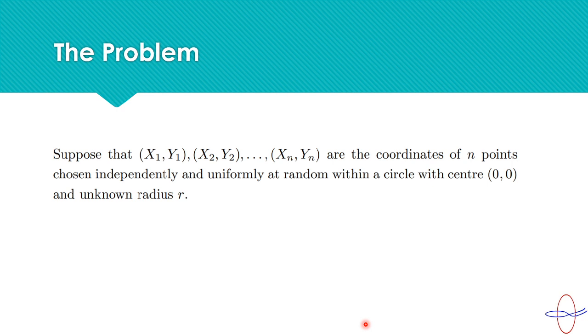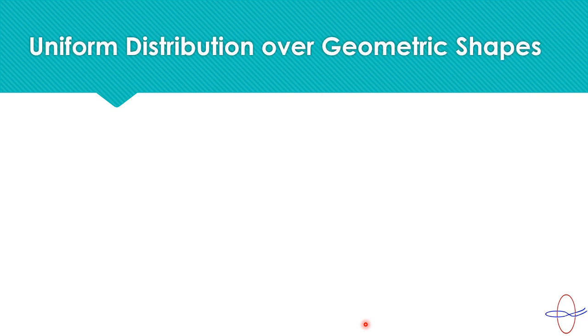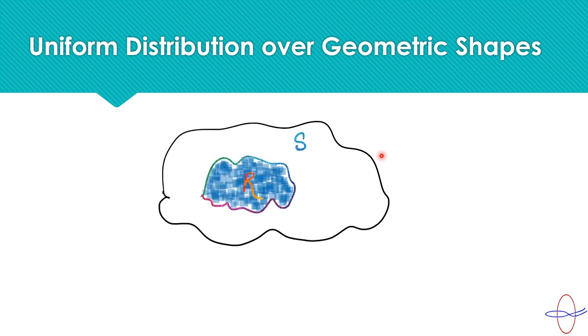The problem tells you that there are n points (Xi, Yi) which are independently and uniformly selected at random from a circle whose center is (0,0) but whose radius is unknown. So maybe you can guess the problem that you have to estimate r. But before that, let's understand what exactly we mean by uniform distribution or uniform random selection from a circle or rather any shape. It means that if you have a bigger S region and you are selecting a smaller region r, then the probability of selecting that smaller region r is actually the area of that region r by the total area S. So let's move on to the problem.